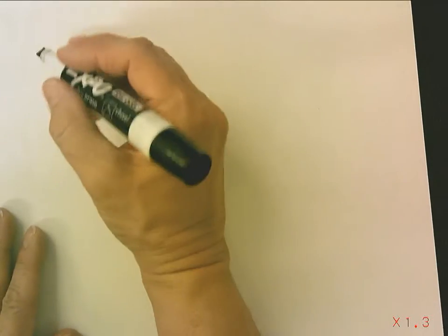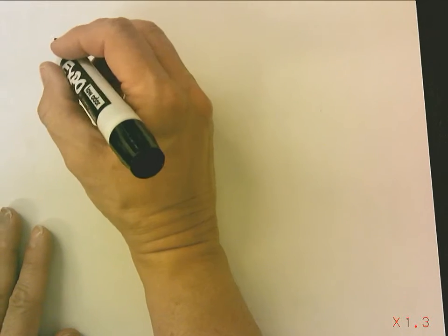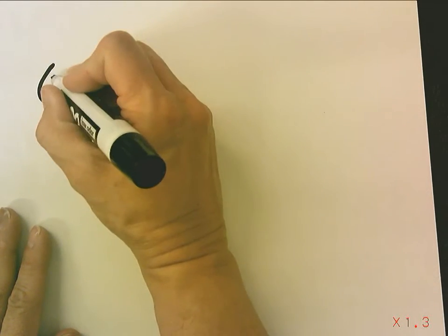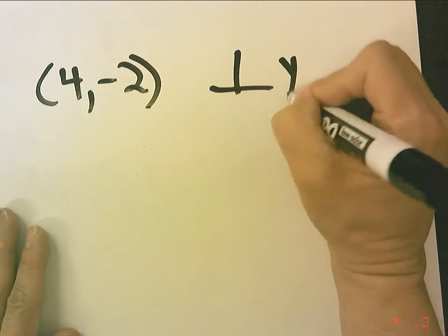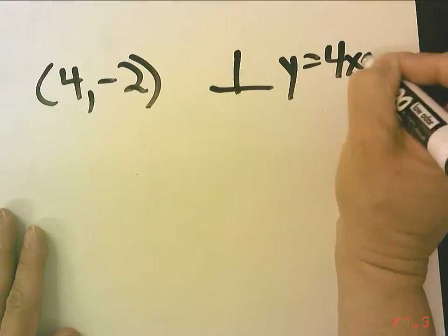Now the next one asks you to write an equation in slope-intercept form that passes through the point 4, negative 2, and is perpendicular to y equals 4x plus 2.